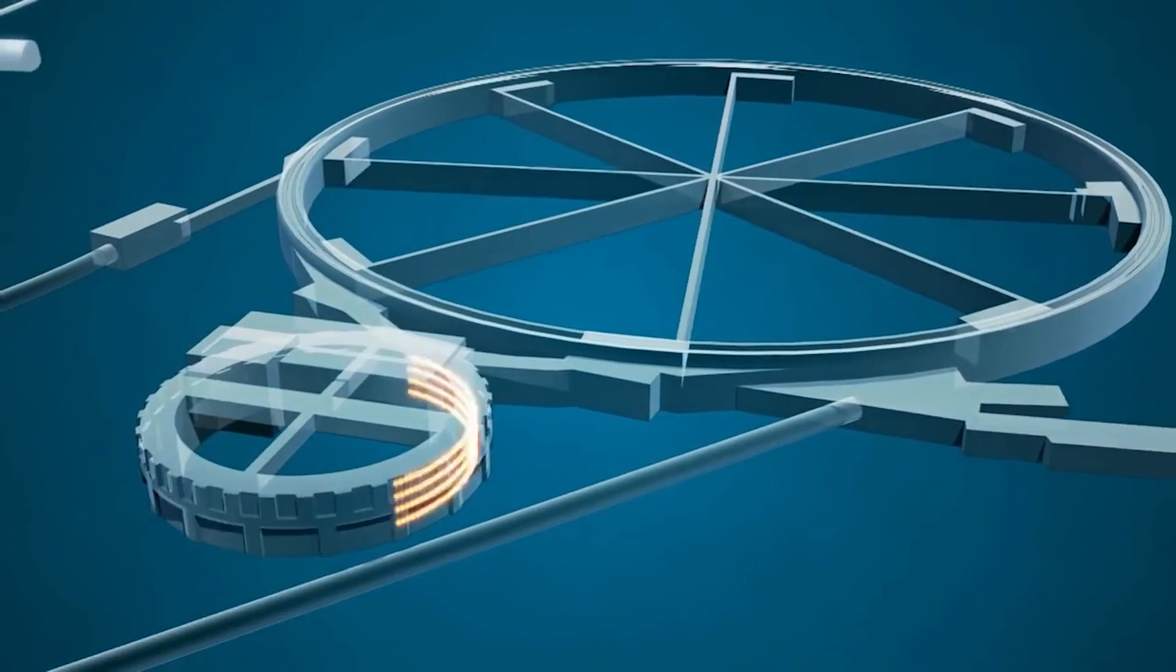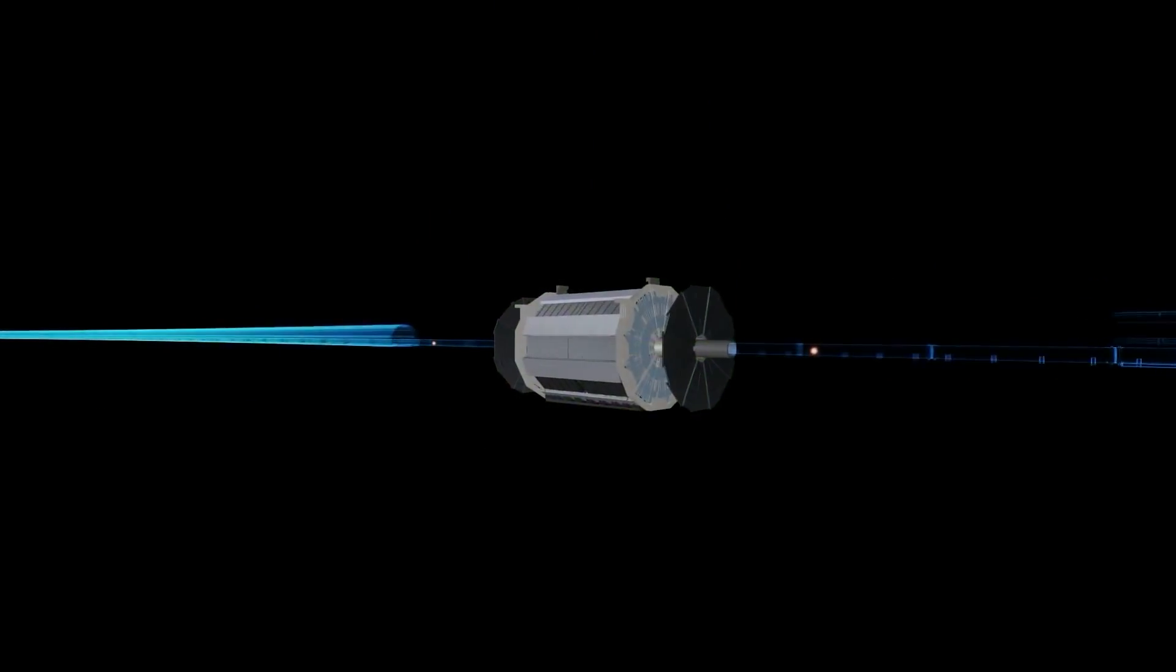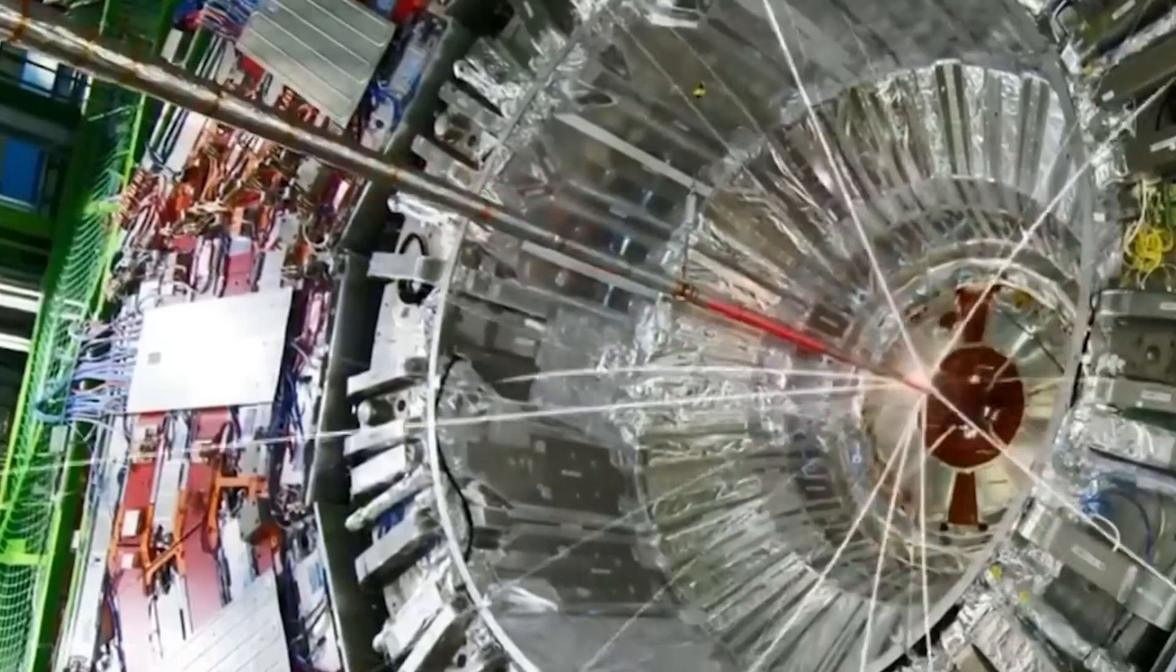Each machine accelerates a beam of particles to a specific energy before passing it on to the next machine in the chain. This sequential process continues, gradually raising the beam's energy until it reaches its peak in the final stage of the LHC.